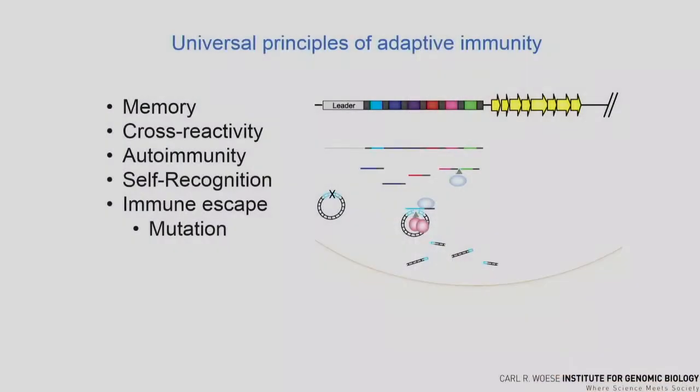Like other forms of adaptive immunity, like our own B and T cell immunity, CRISPR adaptive immunity has memory, cross-reactivity, autoimmunity, and self-recognition. The way that viruses escape this immunity is through mutation — it's a sequence match, so if the sequence doesn't match, the immunity doesn't work. There's some flexibility built into the system in order to allow the generality of recognition of viruses.